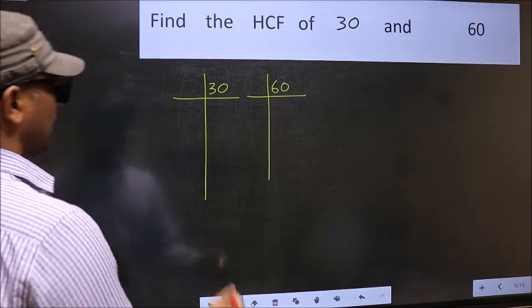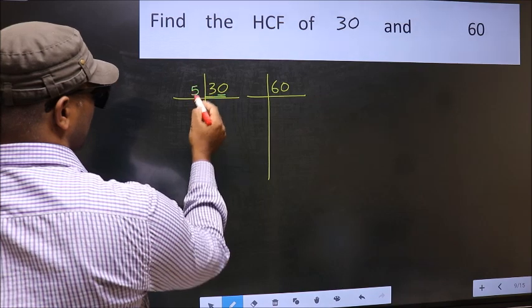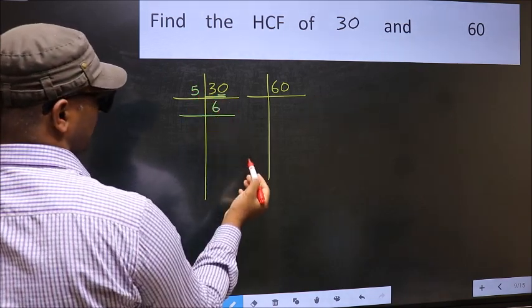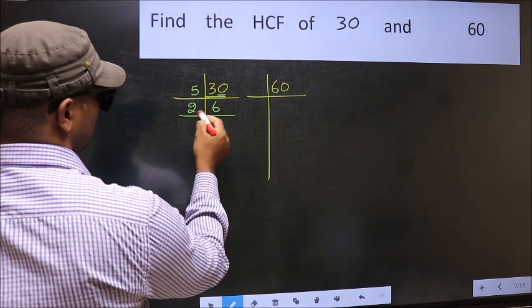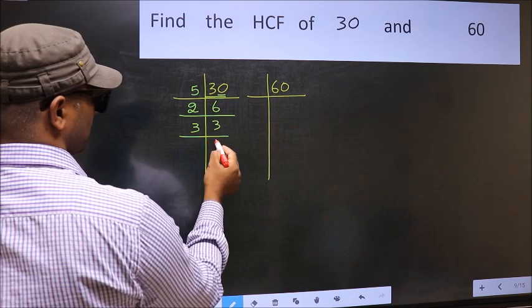Next, in this number, last digit is 0, so take 5. When do we get 30 in 5 table? 5, 6, 30. Now 6 is 2, 3, 6. 3 is a prime number, so 3, 1 is 3.